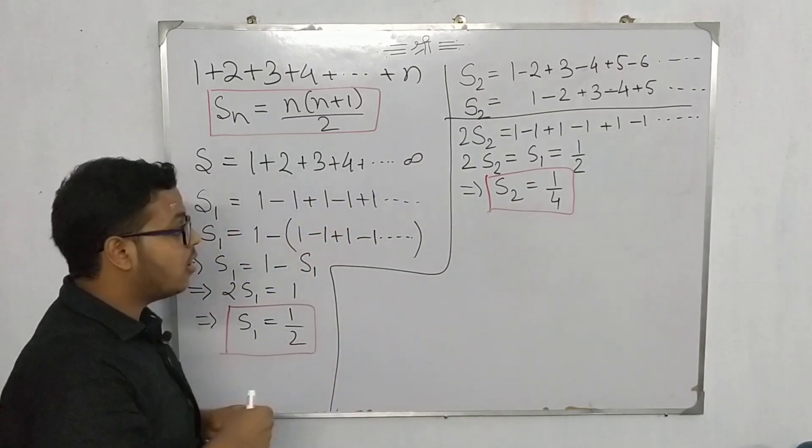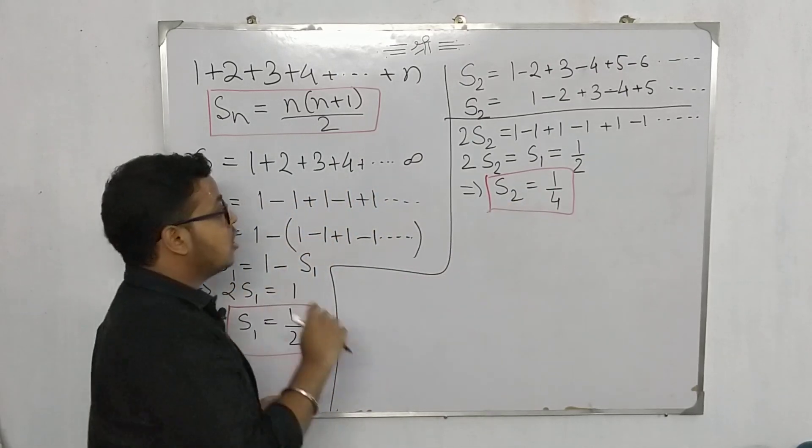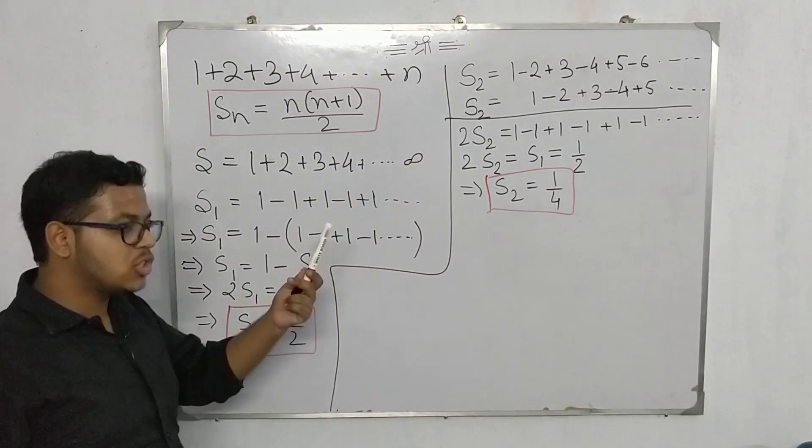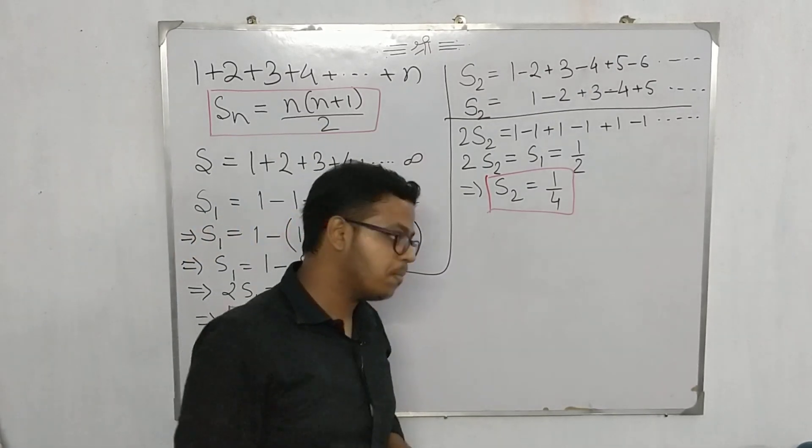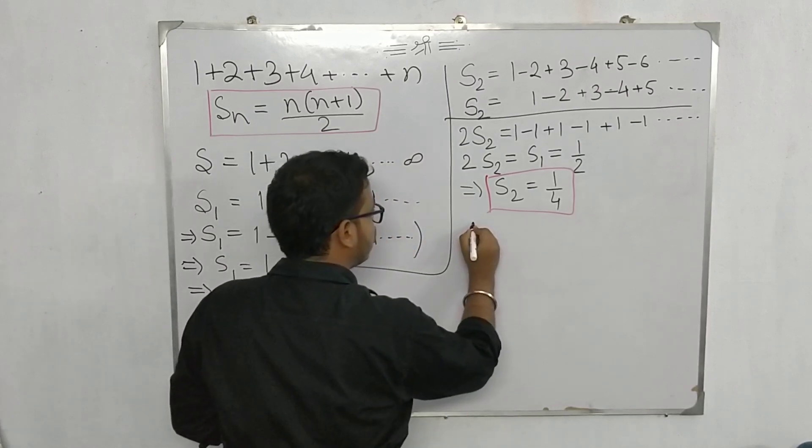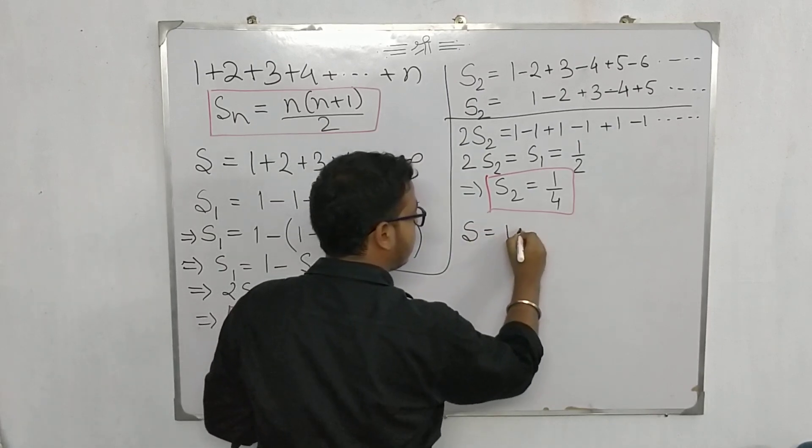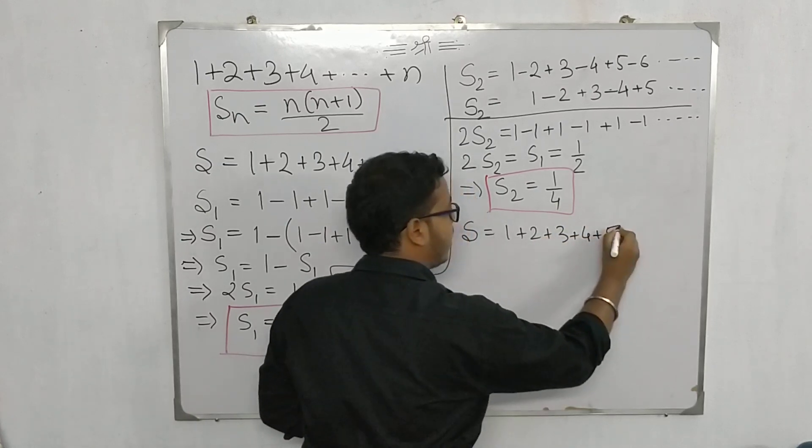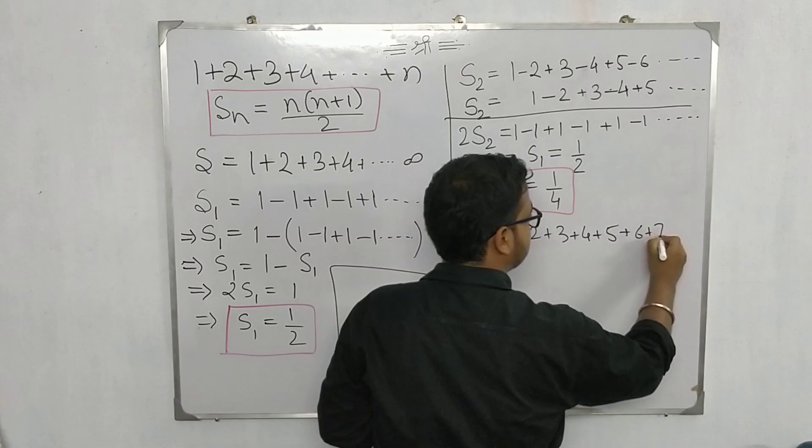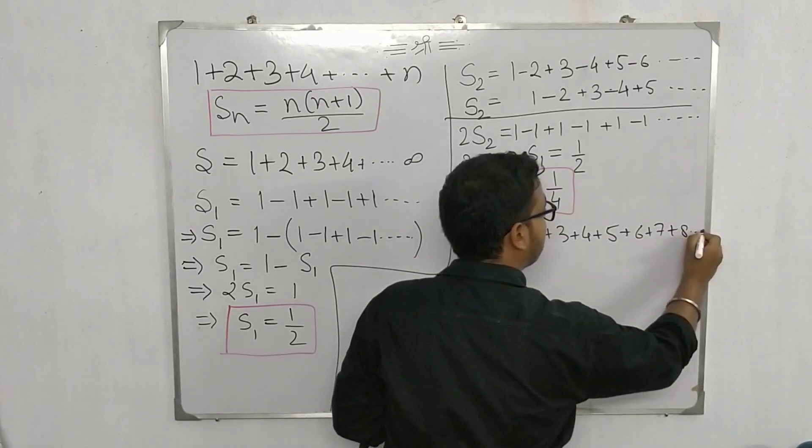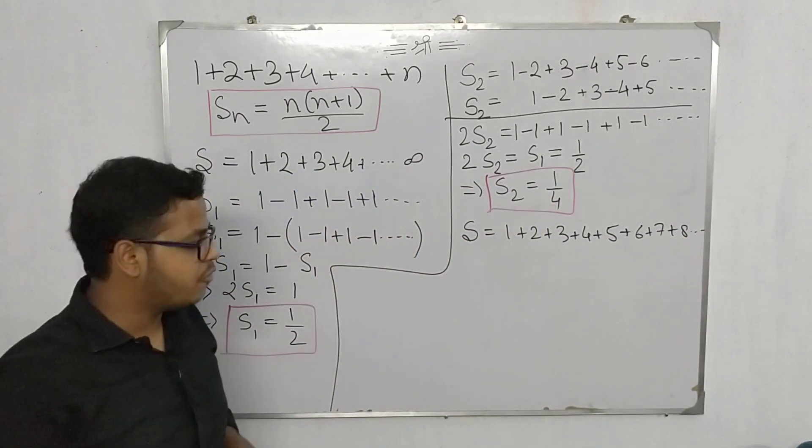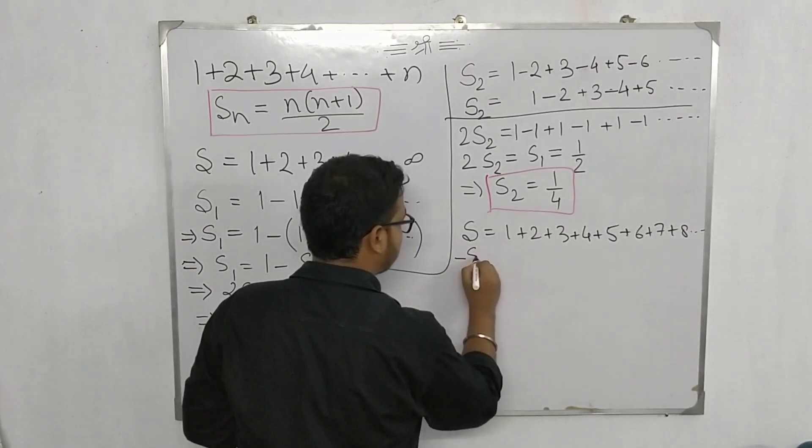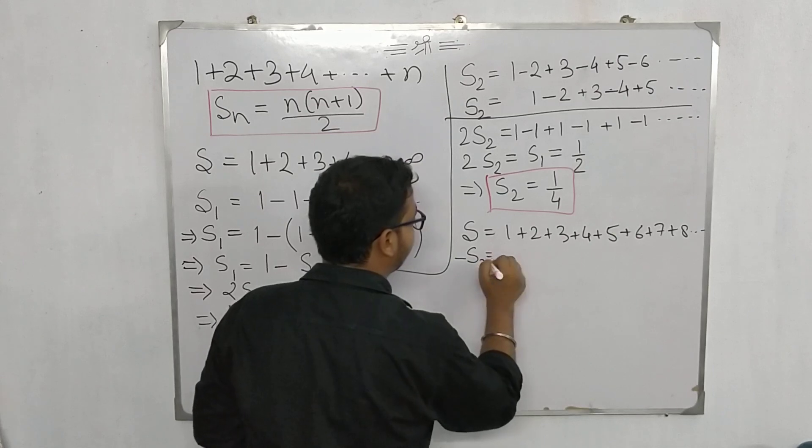So we have got another result. Now using this result we will finally calculate our main series, which was our topic for the day. Series s is 1+2+3+4+5+6+7+8... I'm writing a number of terms but it will be easier for me and for you as well to understand it.